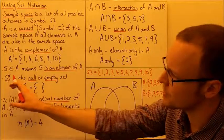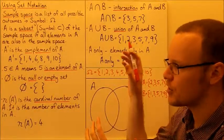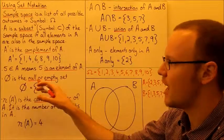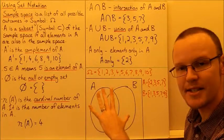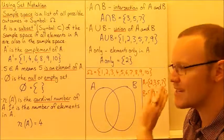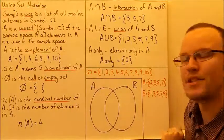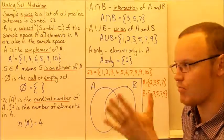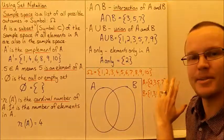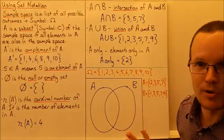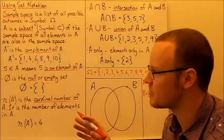A circle with a line through it is the null or empty set. If there is some set within our sample space that doesn't have any values — for example, all of the values from 1 to 10 that are greater than 100 — there are no values in that, so it looks empty. It's got no elements.